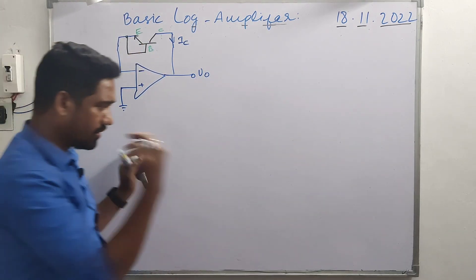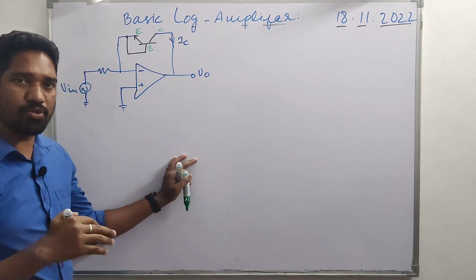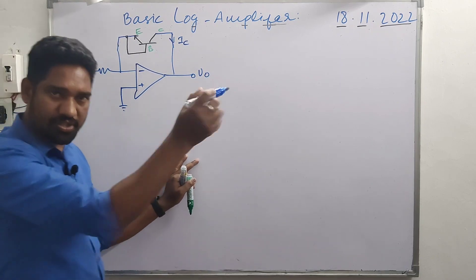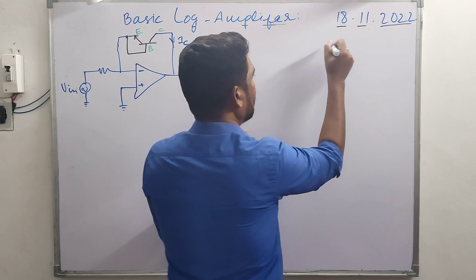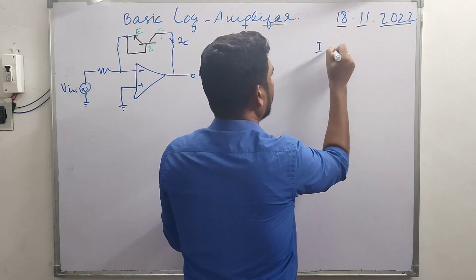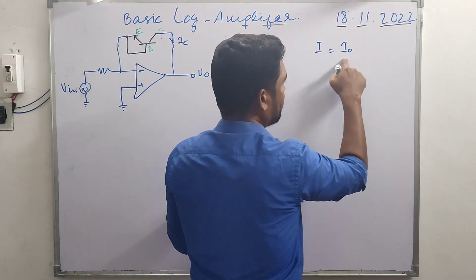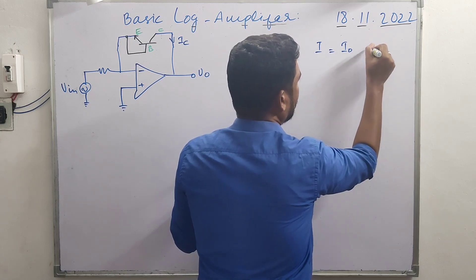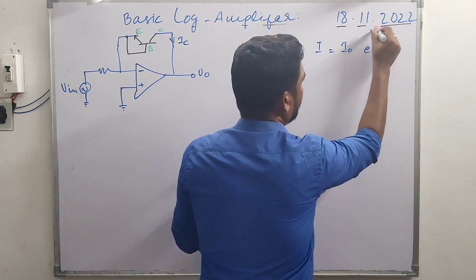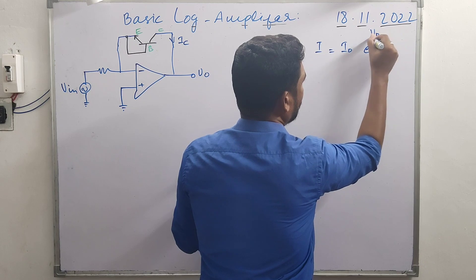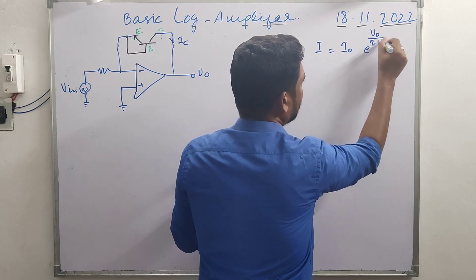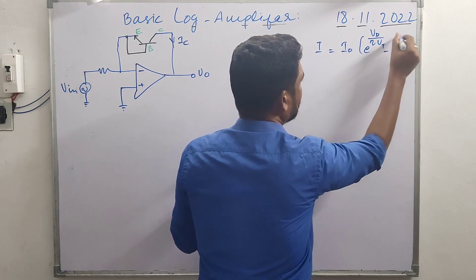The transistor and diode have similarity in this condition. We can use the property of diode current equation. The diode current equation is: I = I₀ (the reverse saturation current) × (e^(V_d/V_t) - 1).